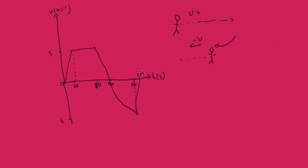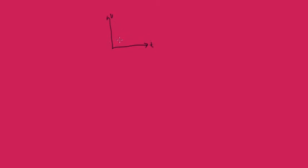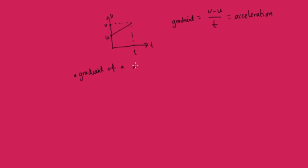Let's draw a very basic velocity-time graph. Imagine we started off with point u and came to point v in some time t. The gradient would be v minus u over t, which is also our equation for acceleration. So the gradient of a velocity-time graph is equal to the acceleration.